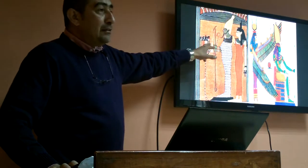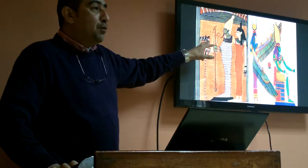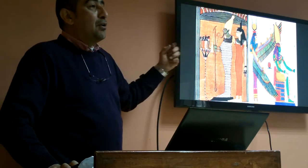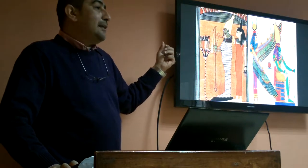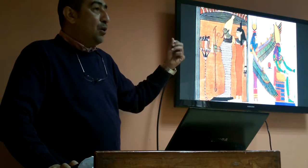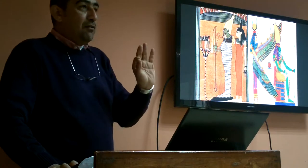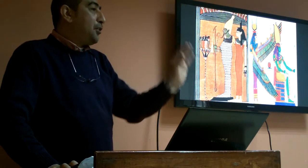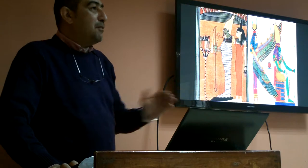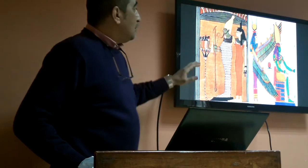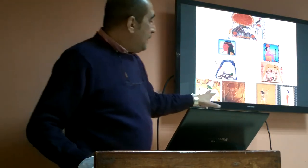Osiris is always shown in the form of a mummy. The color of his skin is either dark blue, dark green, or black — which is the color of the human body after death and mainly after mummification and the dehydration of the body. What happened to that family? We have two brothers, and there was jealousy between them for one reason or another.